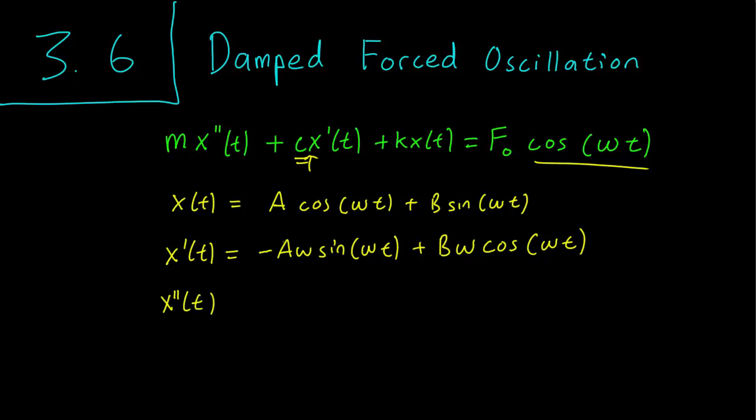And the second derivative, minus a omega squared cosine omega t, rather, minus b omega squared sine omega t.